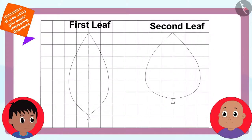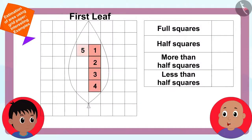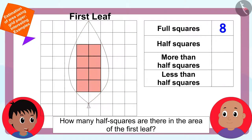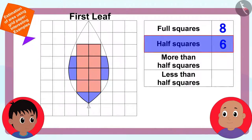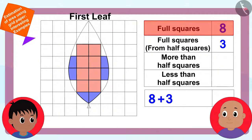Raju said it was easy. He asked Bablu how many full squares were in the area of the first leaf. Bablu quickly counted and said eight squares. Raju wrote that down. Then he asked how many half squares there were. Bablu said six. Raju noted that six half squares equal three full squares, and added three to the count.